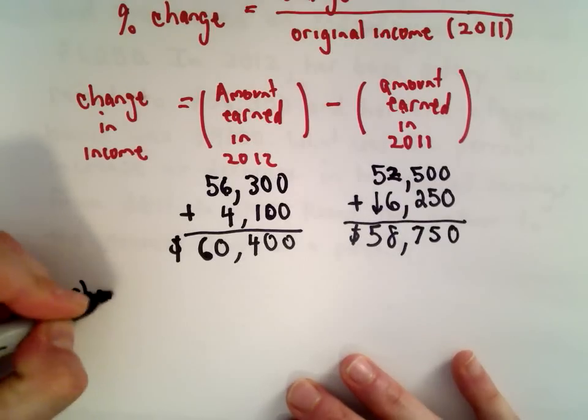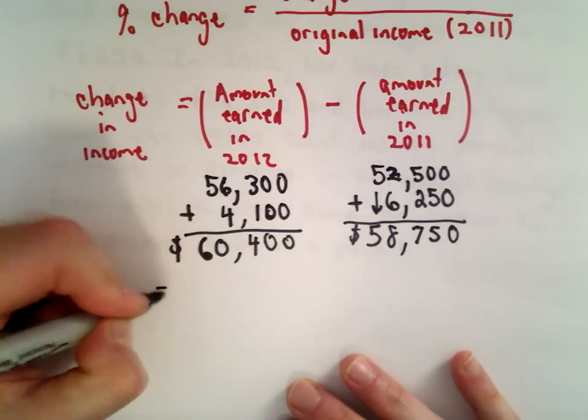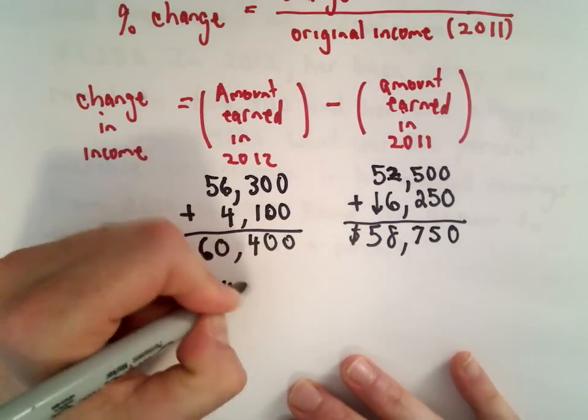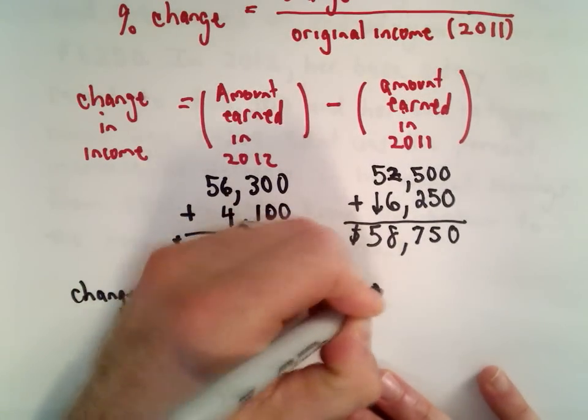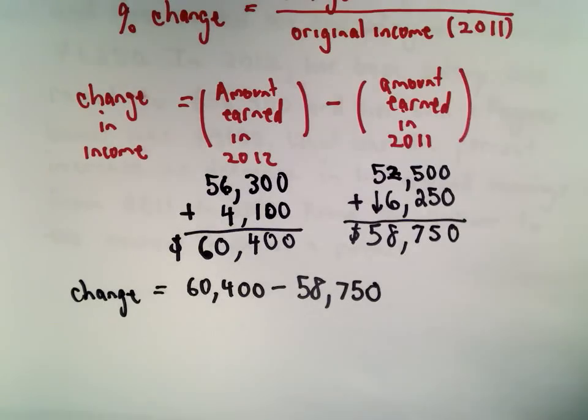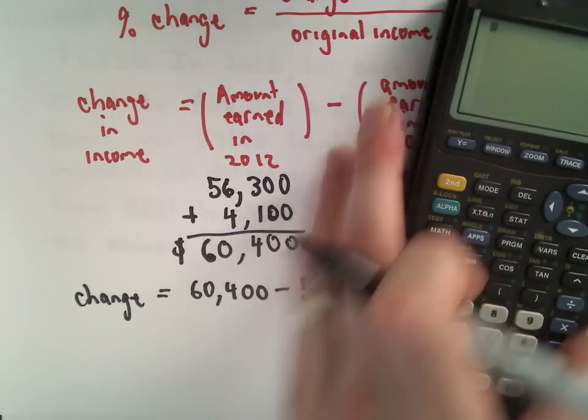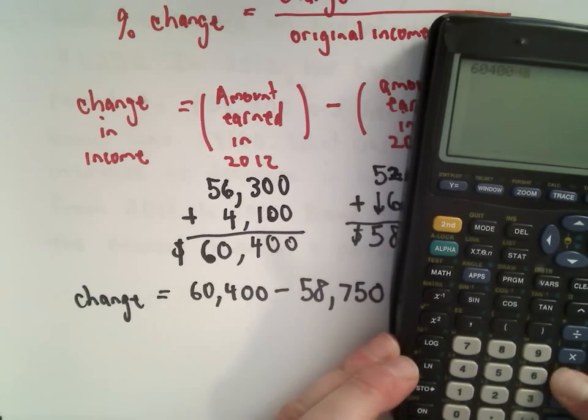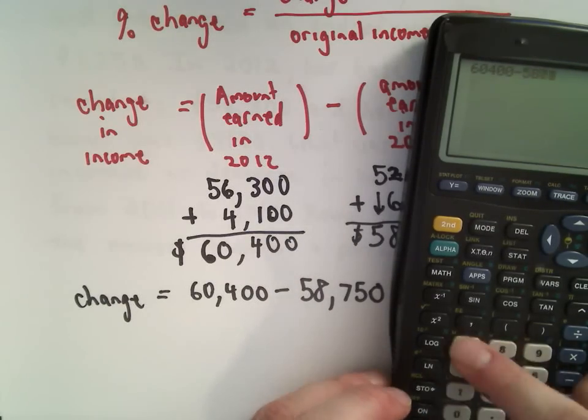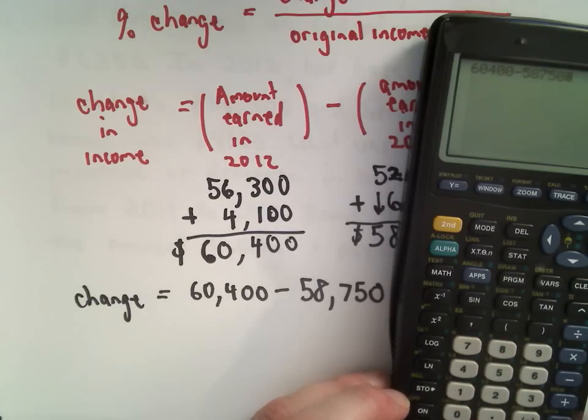So that means the change, that's going to be 60,400 minus 58,750. And again, you're allowed to use your calculator on these. I'm just kind of doing part of it by hand. So if you feel comfortable doing it by hand, feel free. A lot of times it's quicker for me to do it by hand, but certainly feel free to use your calculator.